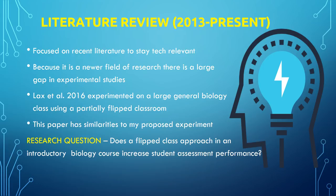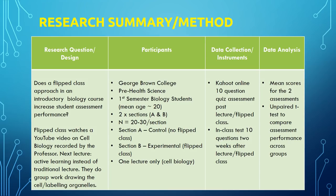They had two different groups: the control group, which was the traditional lecture, and the flipped classroom group, in which students watched a pre-recorded video and then did active learning techniques in class. They compared the assessments from each group to figure out if there was an increase in performance from the flipped classroom, and they did find that there was an increase in performance.